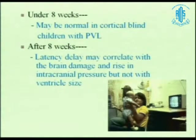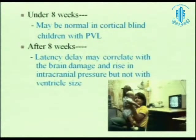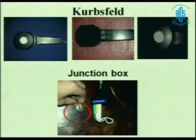Flash VEP is a very gross test that does not tell you anything about visual acuity. Even if the kid has a poor visual acuity of around 6/60, Flash VEP may be normal. Pattern reversal VEP — checkerboard or stripes pattern — can tell you something about visual acuity. Pattern VEP tells you about visual acuity, while Flash VEP has absolutely no role in estimating visual acuity in kids. Under 8 weeks, Flash VEP is not useful because it may be normal even in cortically blind children.